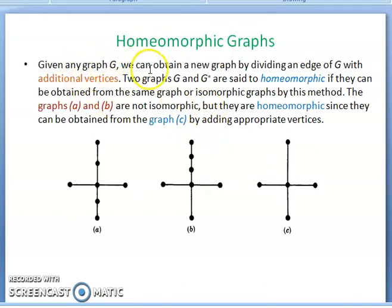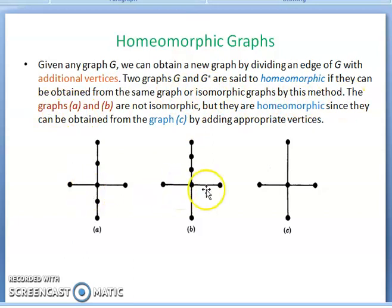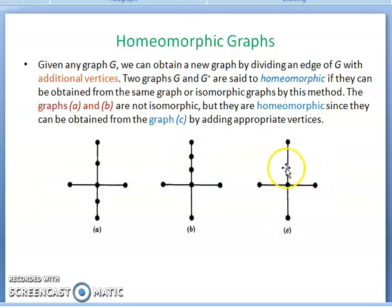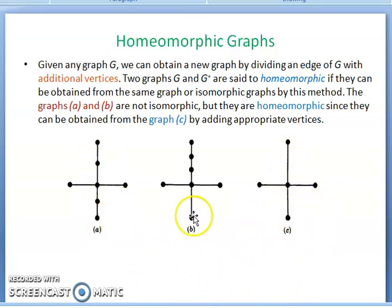Homeomorphic. For any graph G, we can obtain a new graph by dividing an edge of G with additional vertices. Two graphs G and G* are said to be homeomorphic if they can be obtained from the same graph — or from isomorphic graphs — by this method. The graphs E and B are not isomorphic, but these two are homeomorphic because they are both obtained from the same base graph.